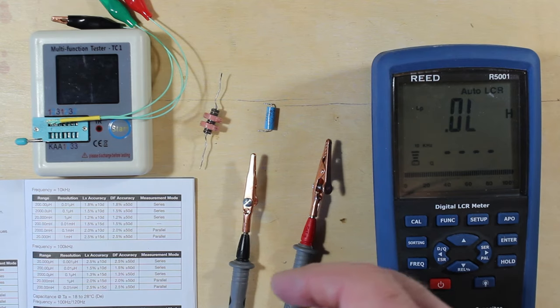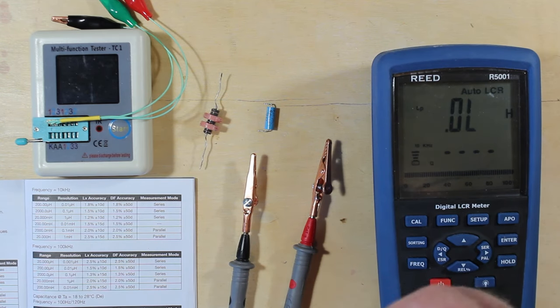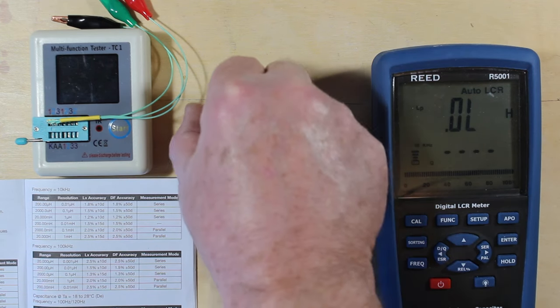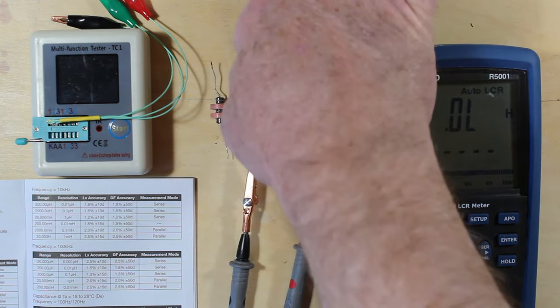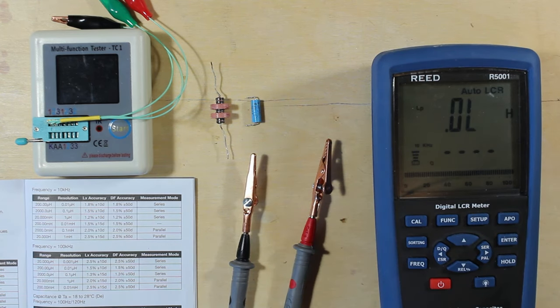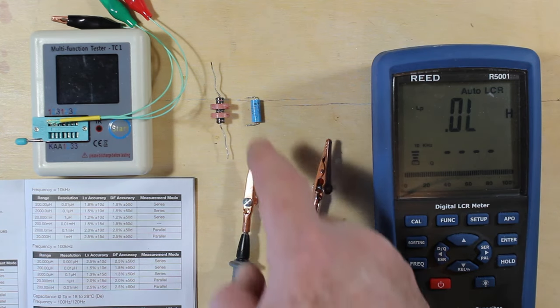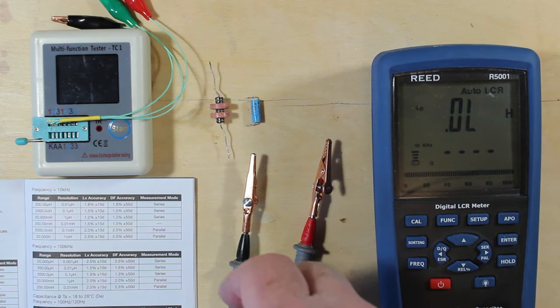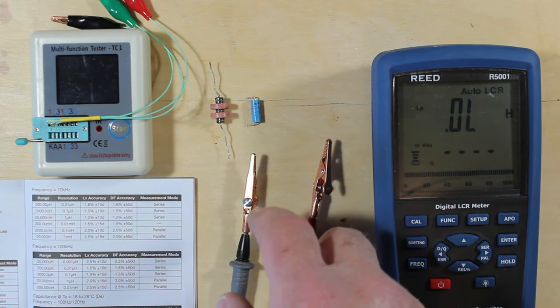So I had to figure out a different method. The first method I tried was the parallel method. I paralleled this inductor up with this 1% tolerance capacitor and used a resonant frequency method to figure out the value. We did the calculation, and it came out to 2.56 millihenries.